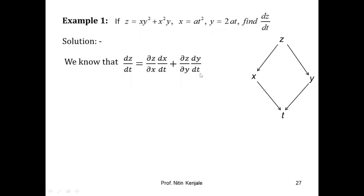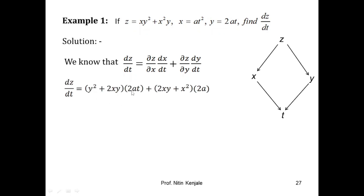Now let us calculate the derivatives on the right-hand side. Since z = xy² + x²y, its derivative with respect to x keeping y constant gives ∂z/∂x = y² + 2xy. Since x = at² where a is a parameter, dx/dt = 2at. So the first term of dz/dt is (y² + 2xy)(2at).